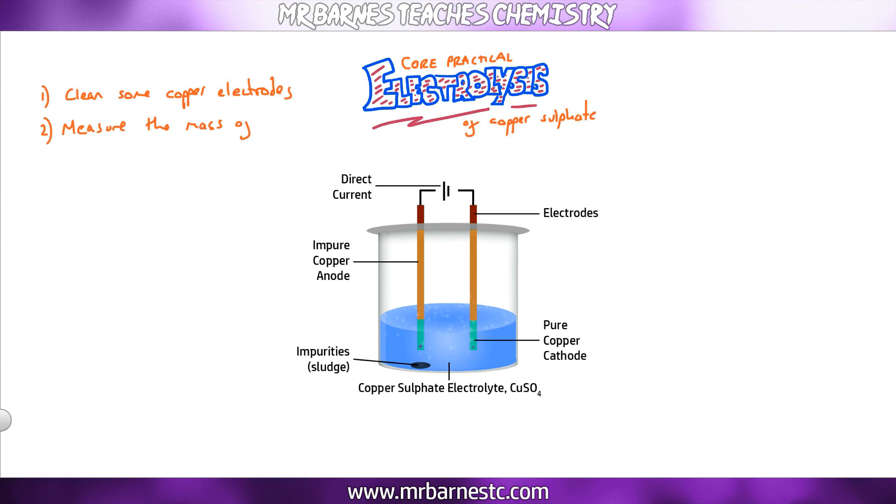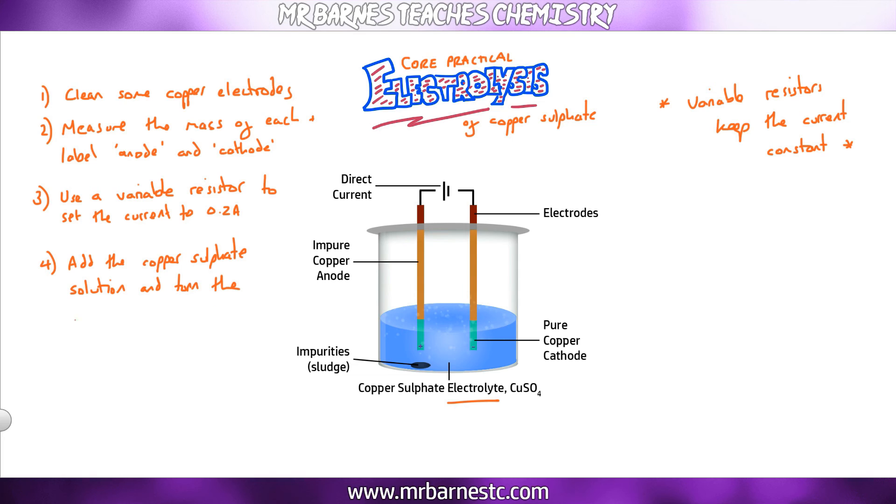We've cleaned our copper electrodes, we then need to measure the mass and label one anode and one cathode. The next thing is we want to get a variable resistor and make sure the current is set to 0.2 amps. A variable resistor keeps the current constant. Number four, add your copper sulfate solution, and then turn the power pack on. Start your stopwatch, and after two minutes, stop it, dry the electrodes, and reweigh. At this point, you'll notice there has been a change in mass. You can then do it at different currents and see how changing the current affects the change in mass.